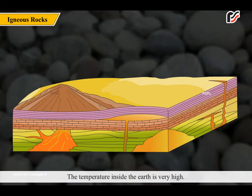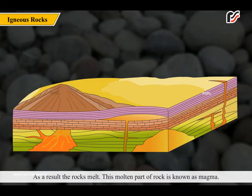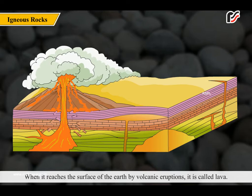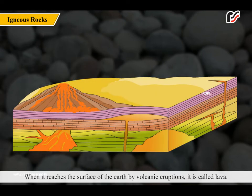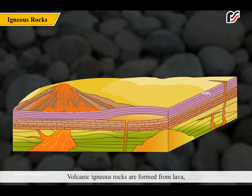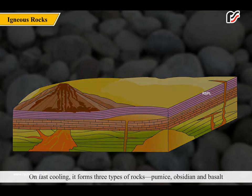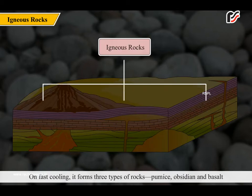The temperature inside the earth is very high. As a result, the rocks melt. This molten part of rock is known as magma. When it reaches the surface of the earth by volcanic eruptions, it is called lava. Volcanic igneous rocks are formed from lava, which comes out of deep inside the earth through volcanoes. Cooling is slow in the crust of the earth near the surface. On fast cooling, it forms three types of rocks: pumice, obsidian and basalt. Whereas on slow cooling, it forms granite.